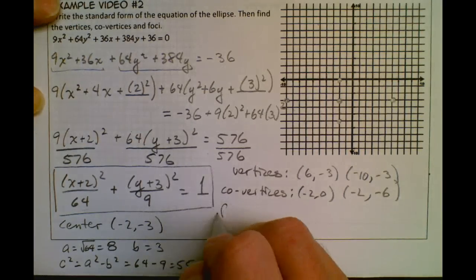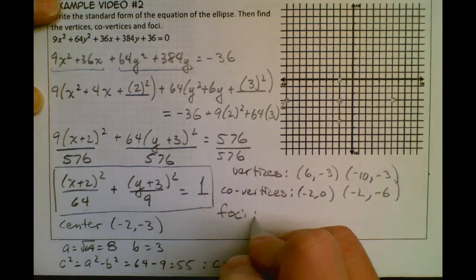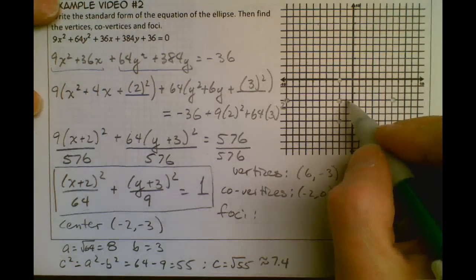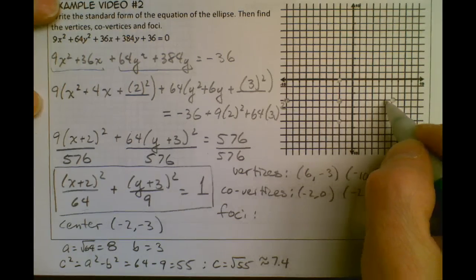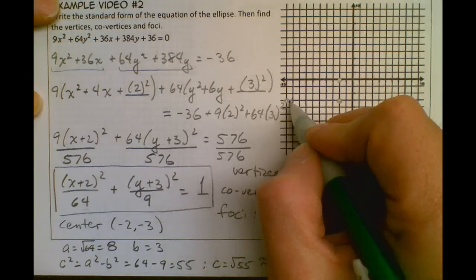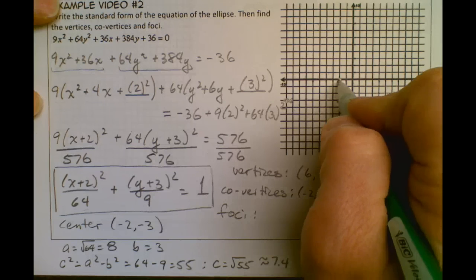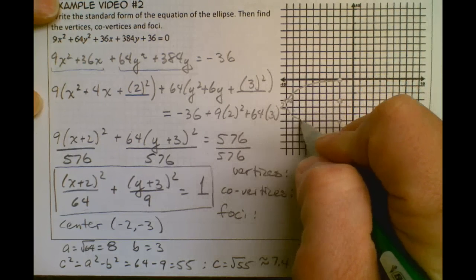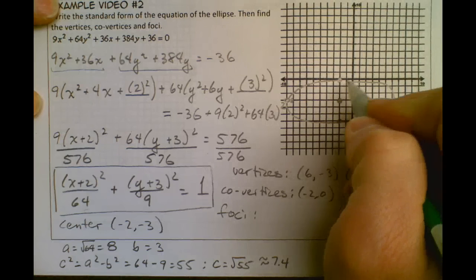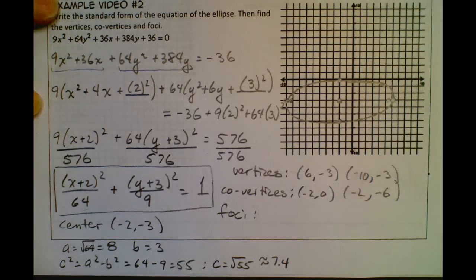Alright, and the last thing I need to find are my foci. So I'm going to use my distance of c. It's the square root of 55, so it's about 7.4. So about 7.4 in each direction. I'm going to draw in my ellipse while we're here. So here's my ellipse. Not too good, but that's okay.